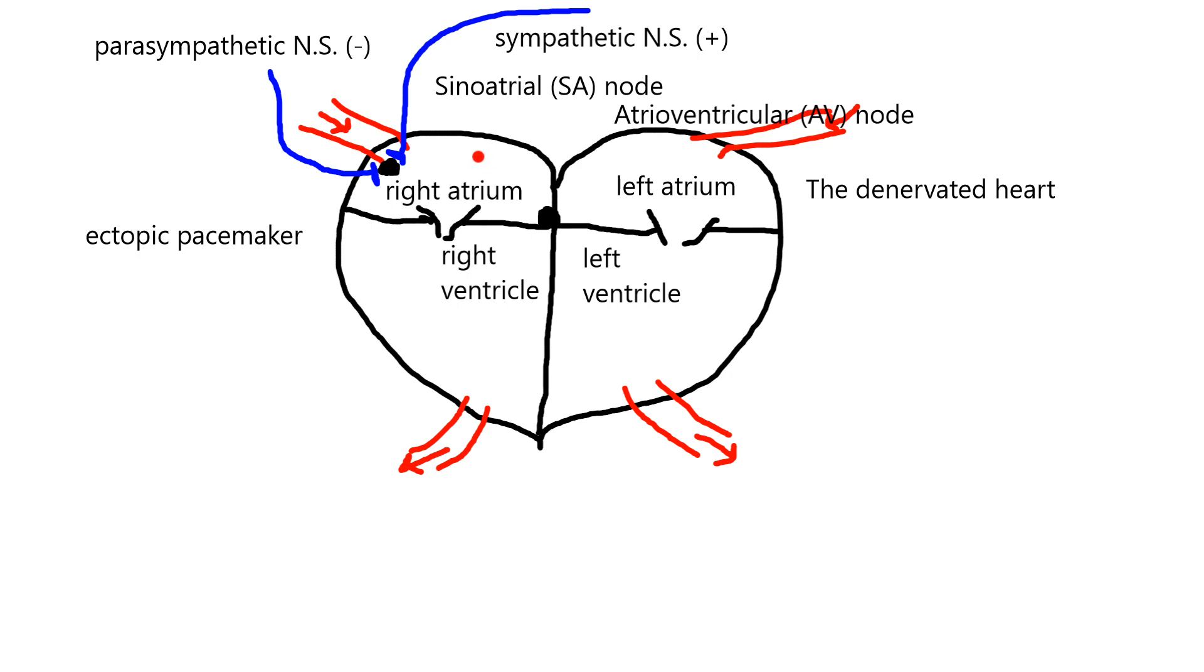So right up here, if there was a group of cells that were setting the beat of the heart, you would call that an ectopic pacemaker. Thank you.